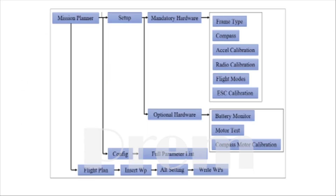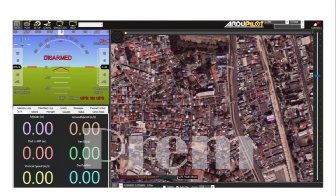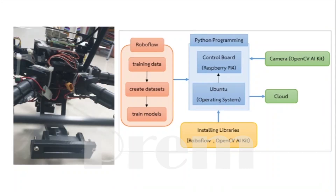Third is designing a program to install the ground station. The design and installation program for the ground station. Next is the mission planner program to set up the flight control with 3 modes: stabilizer, loiter, and auto.